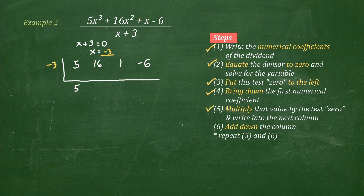Multiply that value by the test zero and write into the next column. So let's multiply this by our test zero, negative 3. What's 5 times negative 3? It's negative 15. Next, add down the column. 16 plus negative 15 is, of course, much easier than subtraction in longhand division — 16 plus negative 15 is simply 1. Next, repeat steps 5 and 6. Multiply this value by our test zero: 1 times negative 3 is negative 3. Then repeat step 6, add down the column: 1 plus negative 3 is negative 2. And then repeat steps 5 and 6 again: negative 2 times negative 3 is positive 6. And then lastly, step 6: add down — negative 6 plus 6 is equal to 0.